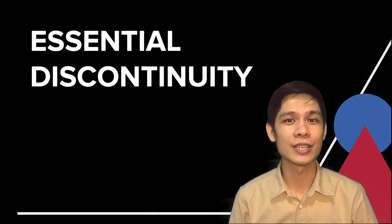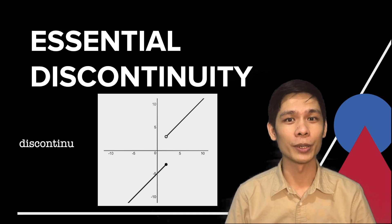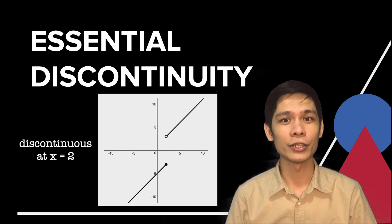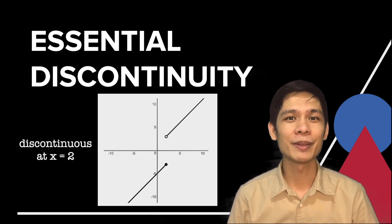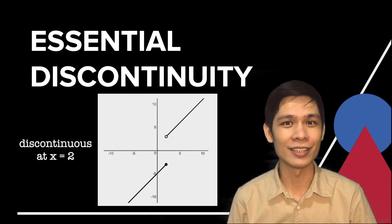For the second type, we have essential discontinuity, which happens when the graph of the function stops at one point and seems to jump at another point. In this case, the limit of the function as x approaches a does not exist.